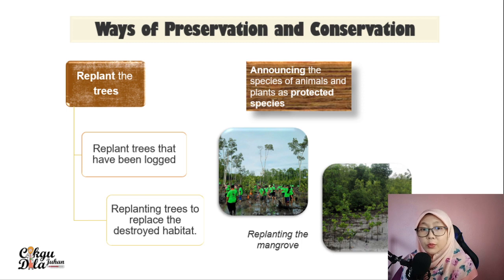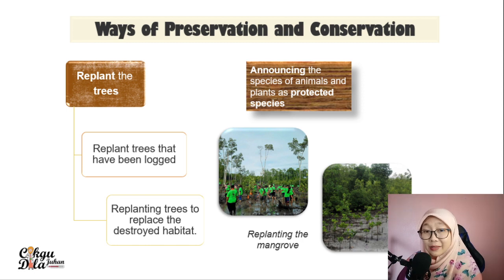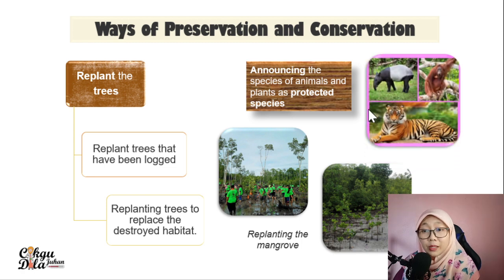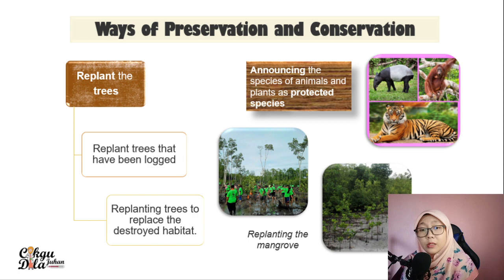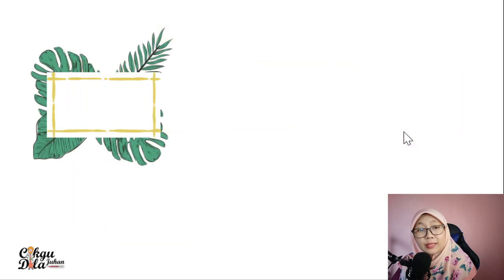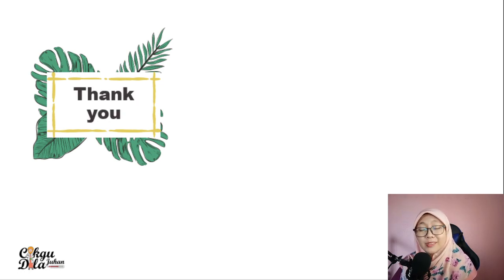Besides replanting trees and enforcing laws, the government also announces certain plants and animals as protected species. For example, the tapir, orangutan, tigers, and elephants are already announced as protected animal species. Once we see these animals, do not harm them, do not do anything to them — just leave them alone.